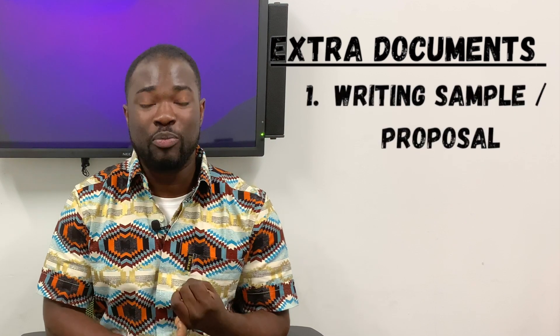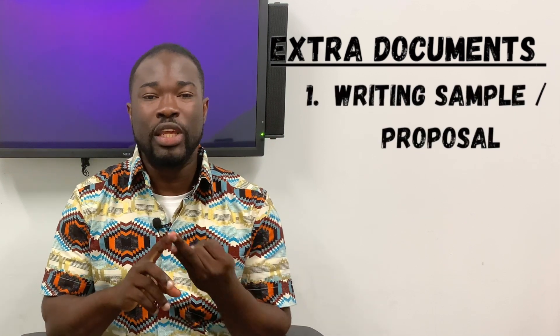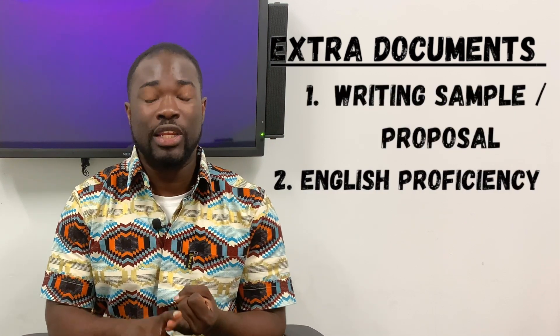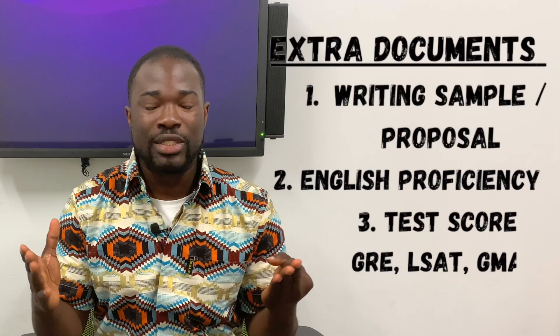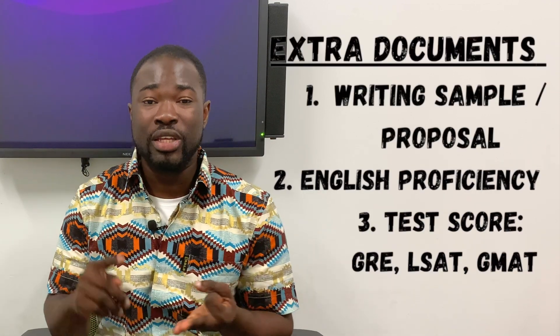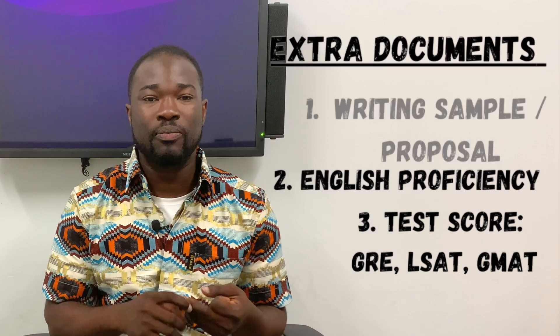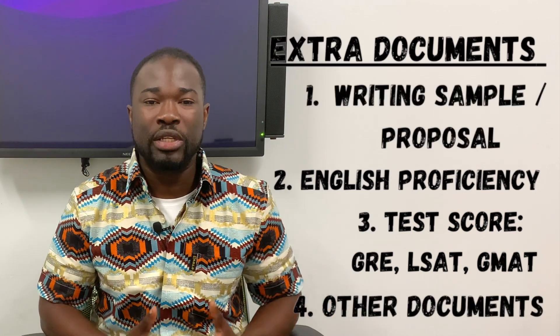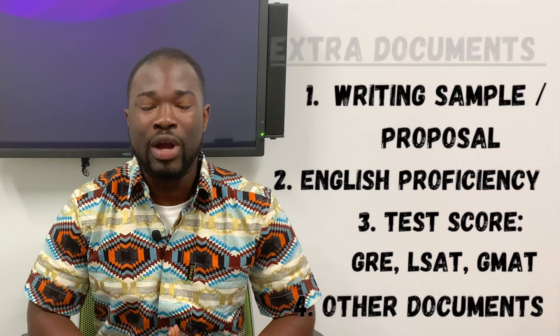Now for the extra documents, you will need a writing sample or proposal, you will need an English proficiency letter, you will need test scores in terms of GRE, LSAT, GMAT, and then a host of other documents that you see in your admissions checklist.